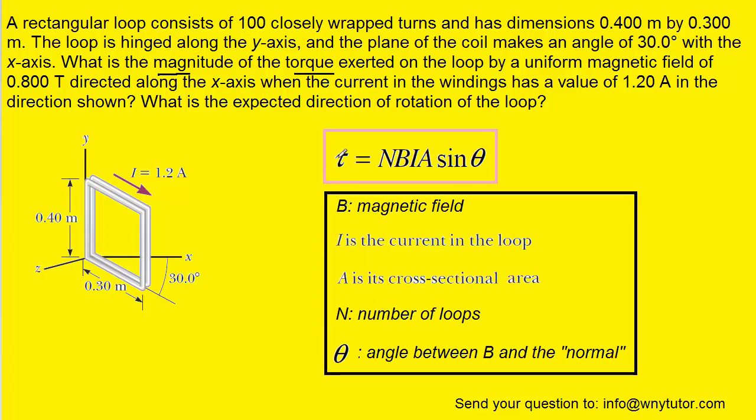So here is that formula. The Greek letter tau is being used to represent the torque acting on the loop, and we have all the different variables defined in the box below. You might want to pause the video and take a look at this before moving on.